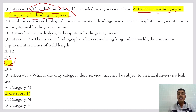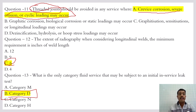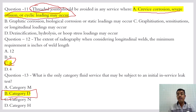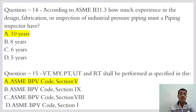What is the only category of fluid service that may be subject to an initial in-service leak test? Category D fluid. Because Category D fluid is non-harmful, we can perform an in-service leak test on it. Category M fluid is hazardous — a single exposure can damage human tissues — so Category D fluid is the one allowed for in-service leak testing.